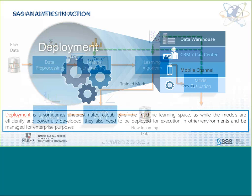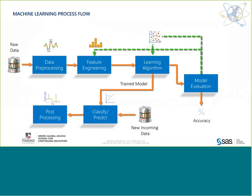The machine learning process flow involves accessing and preprocessing data, preparing and modifying it — generally referred to as feature engineering — and then deploying a learning algorithm. Algorithms like neural networks, regression, and decision trees learn from past data to predict. Before finalizing a model, we evaluate it using validation or test data, pick the best model, and then post-process as needed.